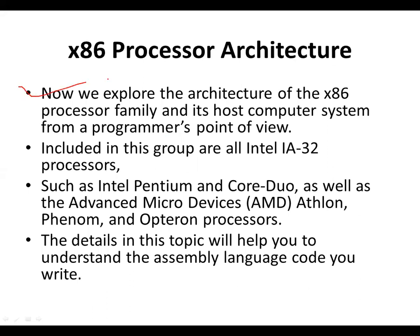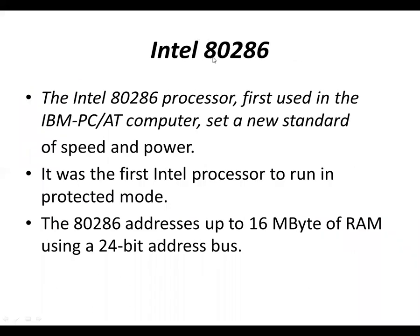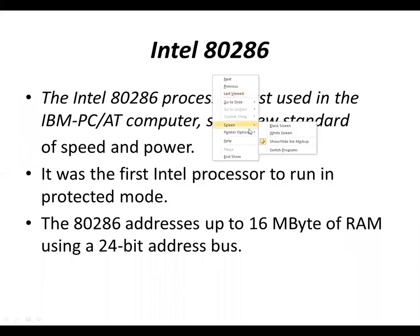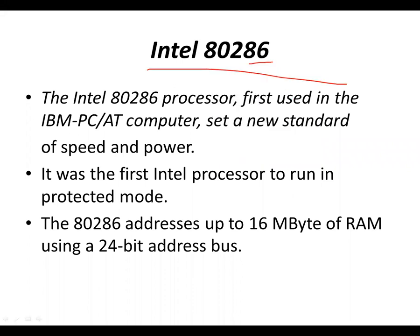The X86 is a family where all the processors come from — Intel Pentium, Core Duo, Advanced Micro Devices (AMD) processors, Athlon, and so on. All of these processors are connected to this family. After the 8086, the next launch was the 80286.